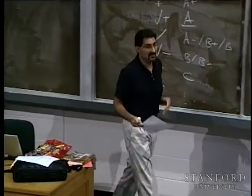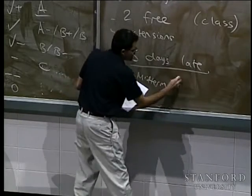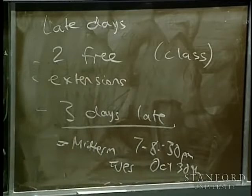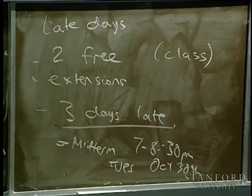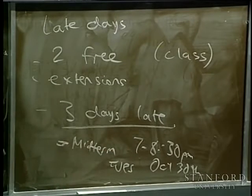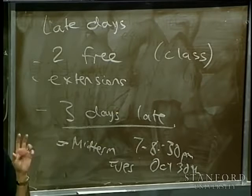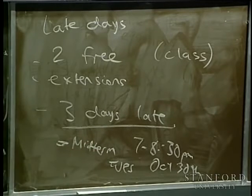There are two exams: a midterm and a final. The midterm is out of class, from 7 to 8:30 p.m. on Tuesday, October 30th. Since it's out of class, if you have a conflict, send me an email and I'll try to schedule an alternate time. To make up for the out-of-class midterm, the Friday of that week we don't have class. The midterm is an hour and a half — we can't compress it into a 50-minute class period.